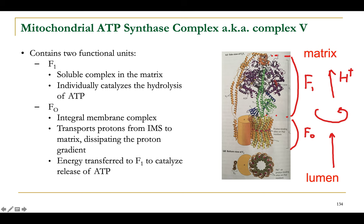This ring-shaped assembly is bound to the delta subunit of F1, which in turn is bound in a non-covalent but tight fashion to the alpha-helical B dimer of the F0 subunit. In total, the ring of alpha-beta subunits, the delta subunit, and the B subunits are tightly coupled to form a stiff stationary structure.